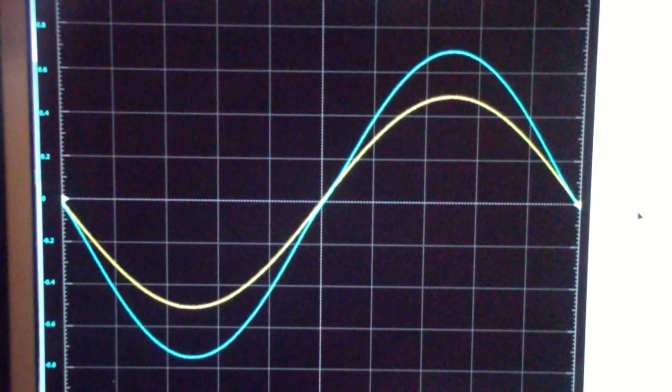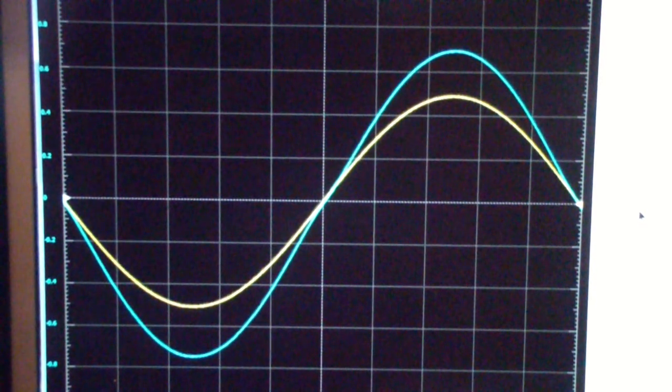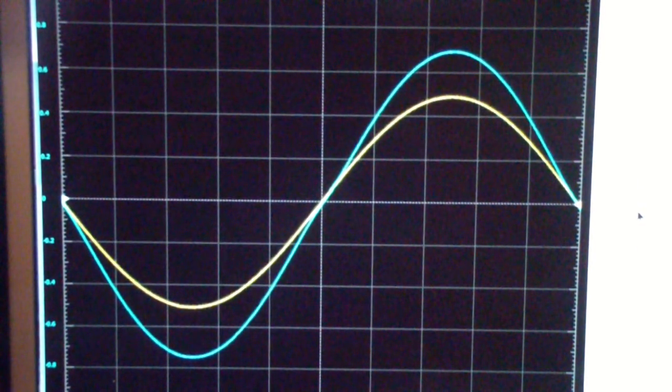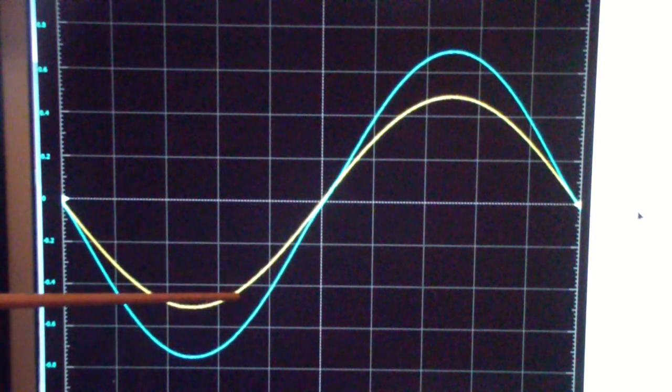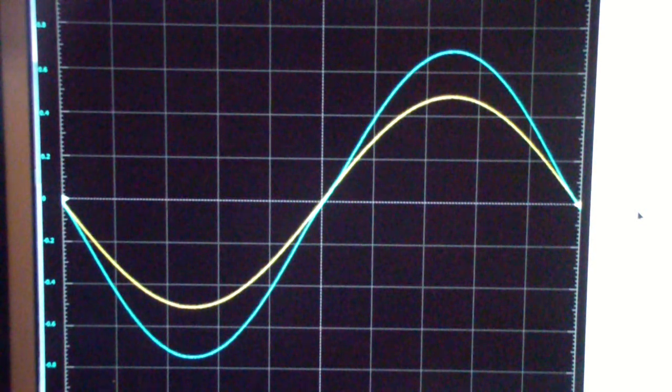I'm revisiting the topic of using the Analog Discovery, in this particular case the Analog Discovery 2, to test audio amplifiers, predominantly amplifiers intended for high fidelity, but it could be others as well. What's on the screen is the input in yellow and the output in blue of a little circuit that I'll show you in a minute.